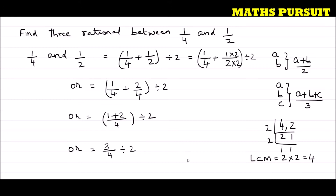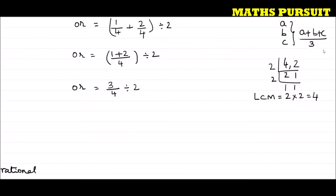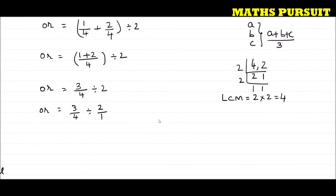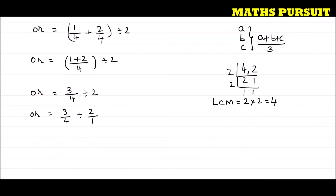Now we divide 3/4 by 2. Since 2 equals 2/1, we have 3/4 divided by 2/1, which equals 3/4 multiplied by the reciprocal 1/2. That gives us 3/8. So the first rational number we found is 3/8.